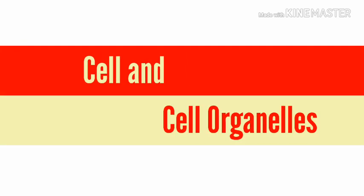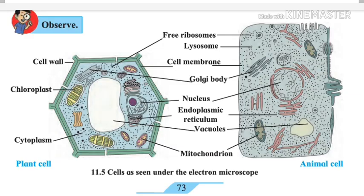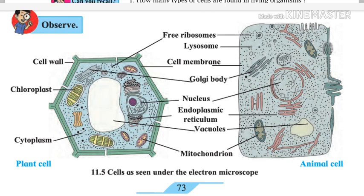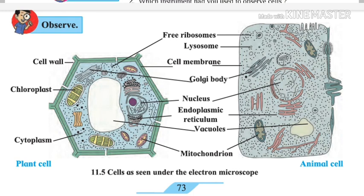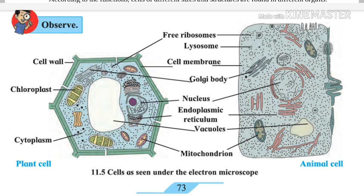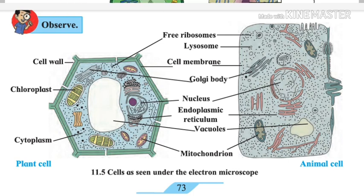Today we will discuss cell and cell organelles. There are two types of cells found in living organisms: the first is plant cell and the second is animal cell. Plant cells are found in plants and animal cells are found in animals. The compound microscope is used to observe the cell.